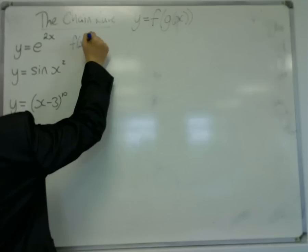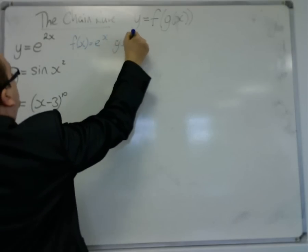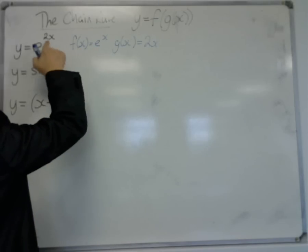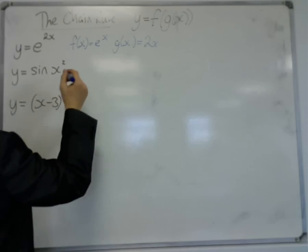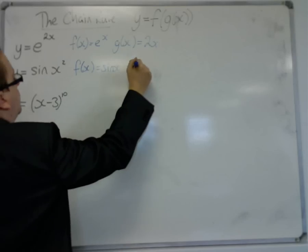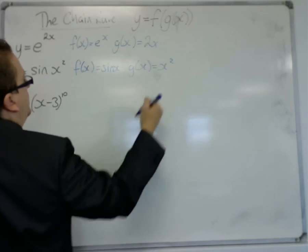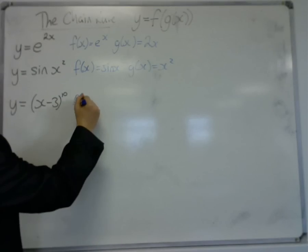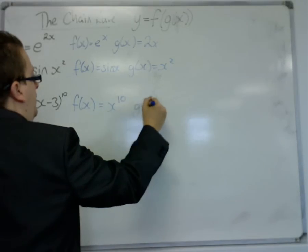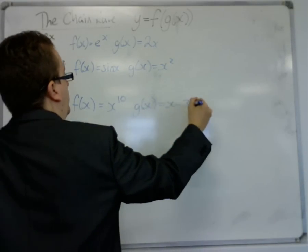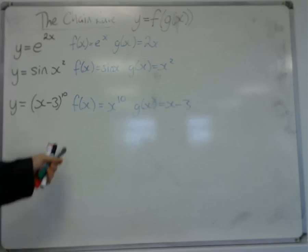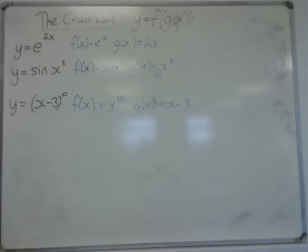In this one, f(x) is e to the x, and g(x) is 2x, so the 2x is in the f(x) here, which is why it's in the index. Here, the main function is sine, while the function inside is x squared. Here, the main function is x to the 10, but the function inside is x minus 3. Each of these are composite functions, and we would require the chain rule in order to differentiate each of them.